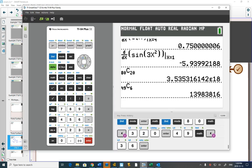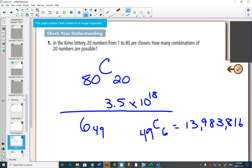1.398, 13,983,816. Get all the numbers here. Almost 14 million different possibilities.